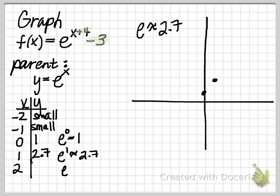And if we were to input 2, e to the second power, again, remember that is approximately 2.7 squared, which if you did go to your calculator, you could see that that's approximately 7.3. So we could go ahead and plot 2 comma 7.3.